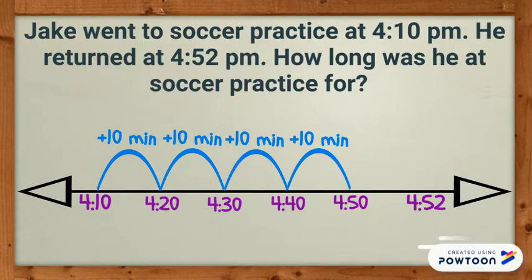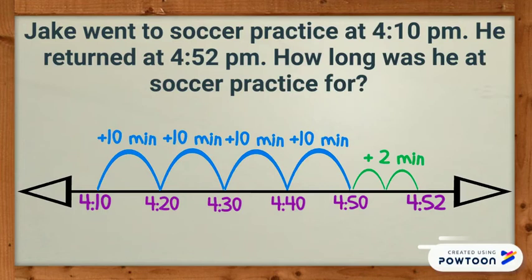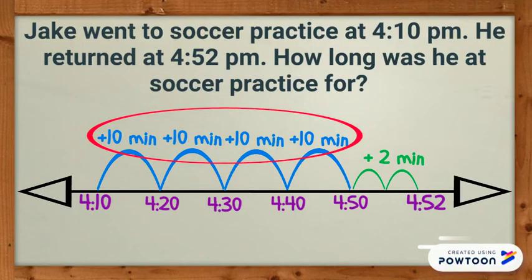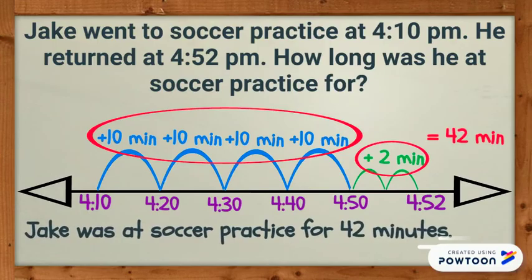Now I will add my one-minute rocks until I reach my end time. 4:50 plus 2 minutes equals 4:52. Now that I have reached my ending time, I can add up all my tens and ones. After adding four groups of 10 and two ones, I can see that 42 minutes passed by. Jake was at soccer practice for 42 minutes.